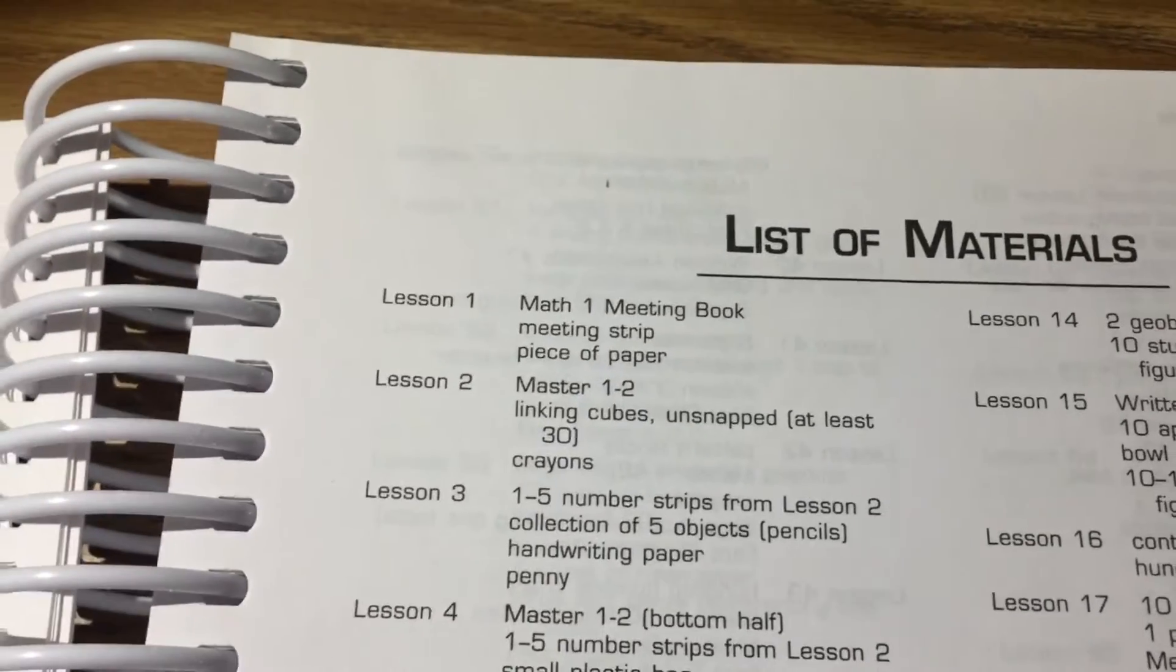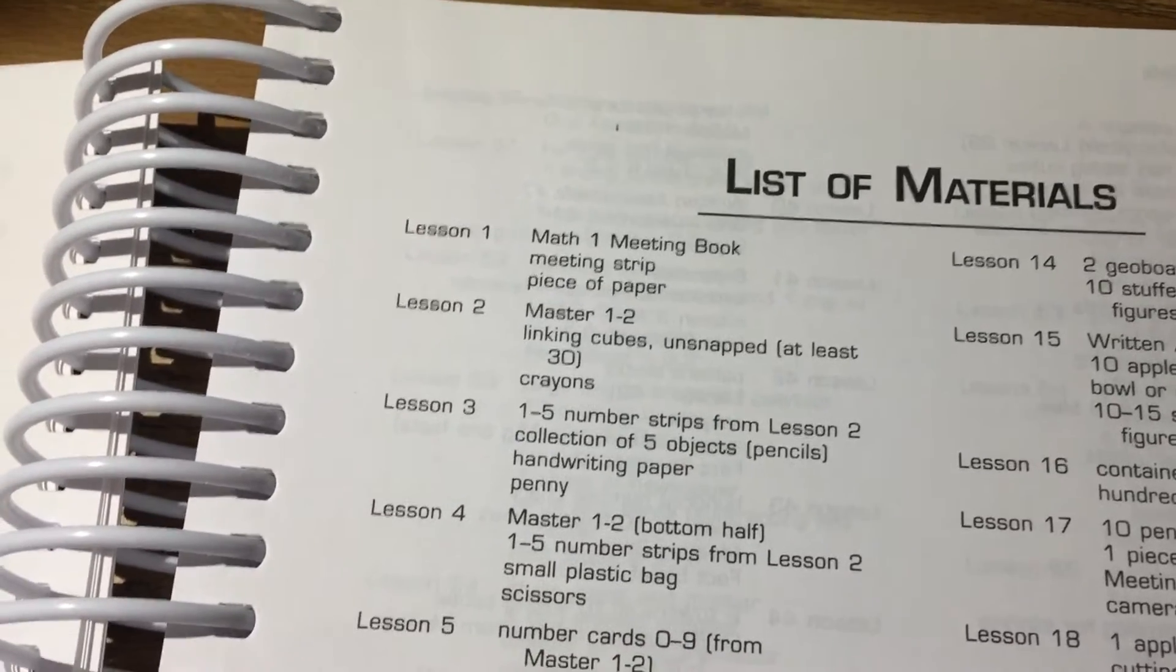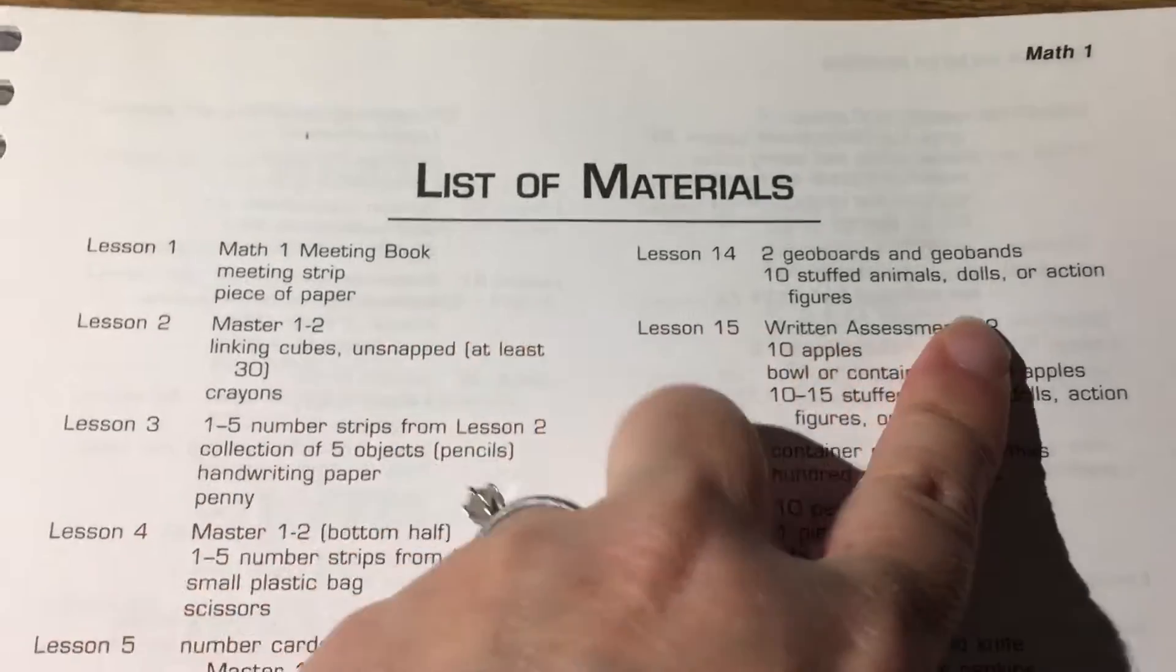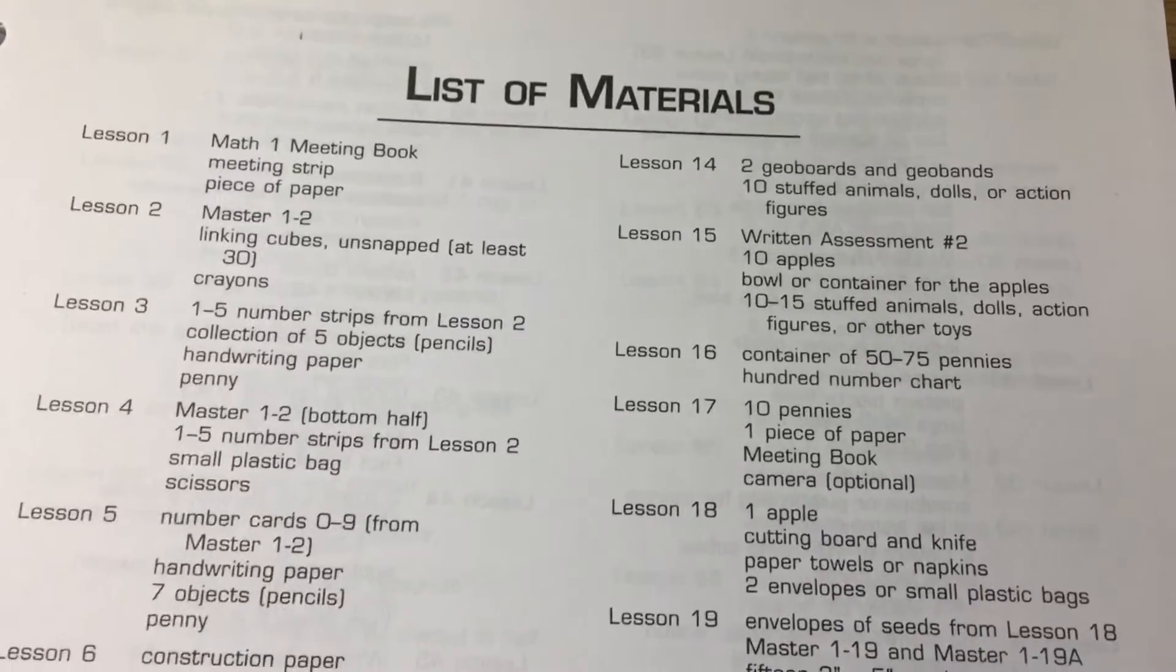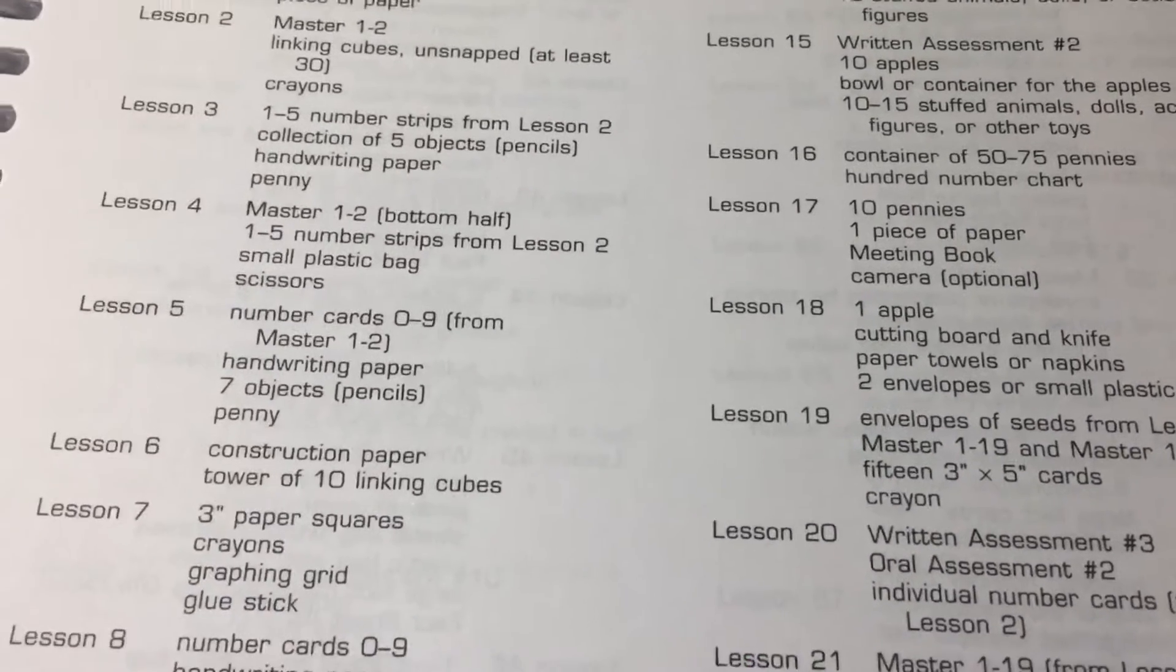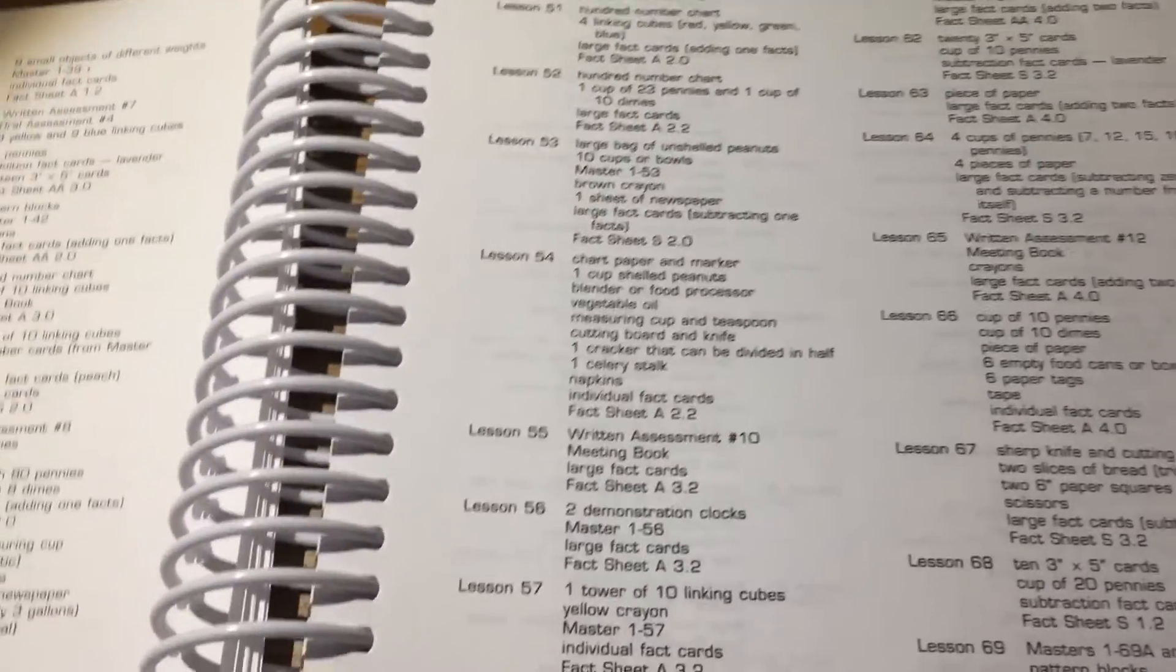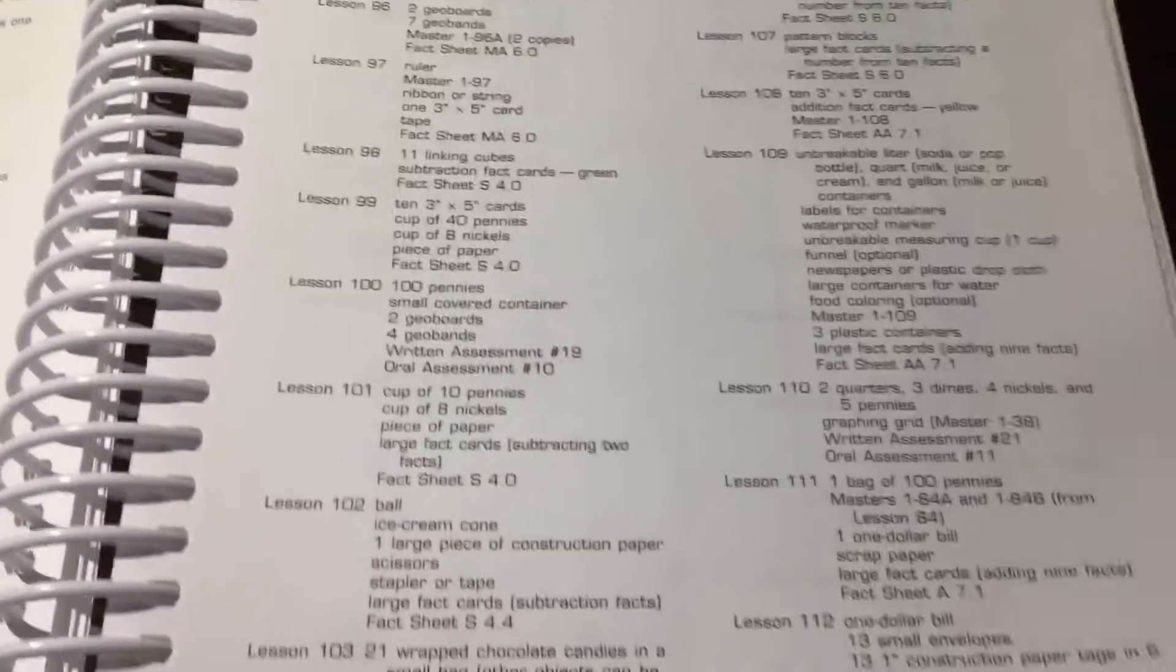List of materials and when you're going to use them. For example lesson one you're using the meeting book and the meeting strips. As you look over here to lesson 14 you see you need the geo boards and that's something that I received in my kit. Other things like pennies. Those things you have to gather up from around the house or get out your wallet and count some pennies out or your kids piggy bank. However you decide to get those materials.